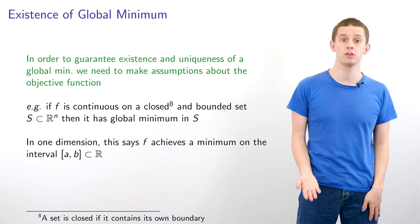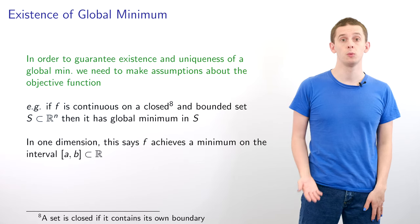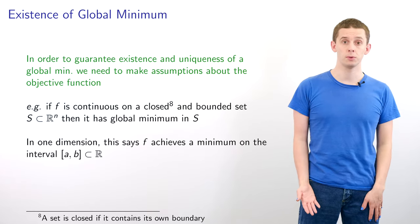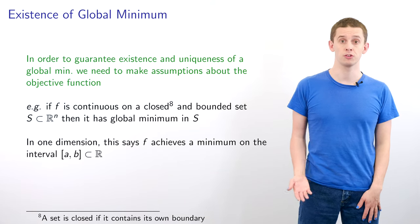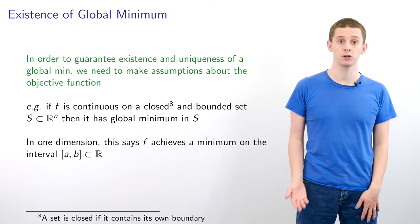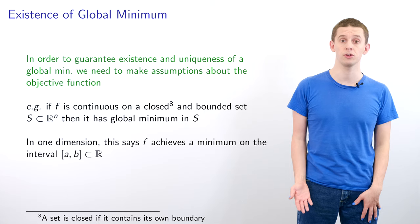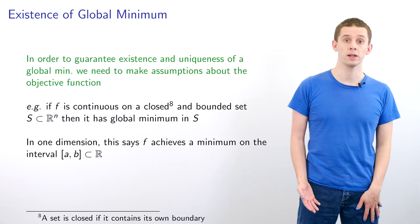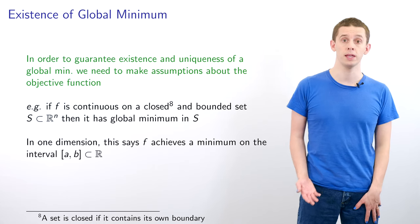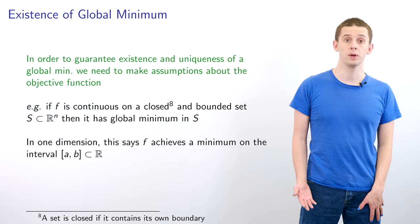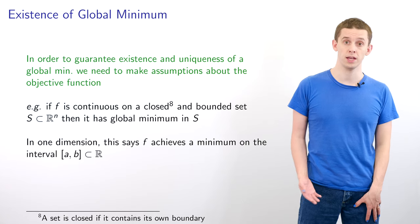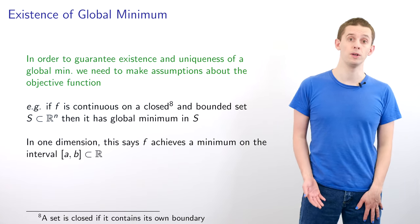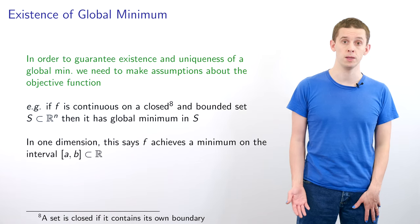In order to guarantee the existence and uniqueness of a global minimum, we need to make some assumptions on our objective function. For example, if our function f is continuous and defined on a closed and bounded set s contained within Rⁿ, then we know from real analysis that f will have a global minimum in s. So in one dimension, if we look at a function f defined on a closed interval from a to b, then we know that it will have a global minimum.